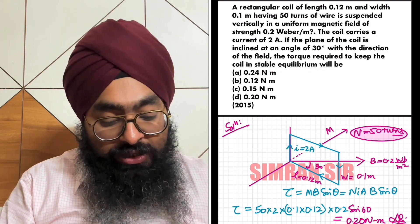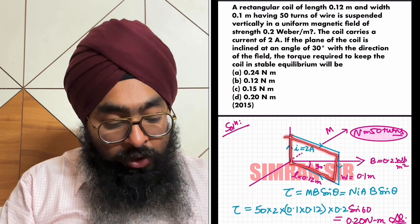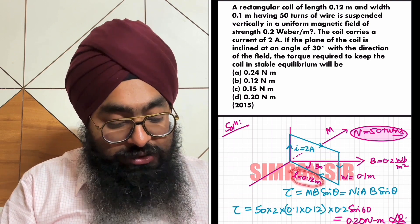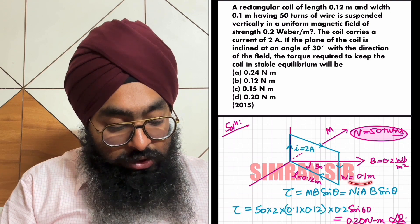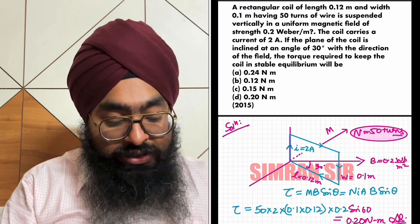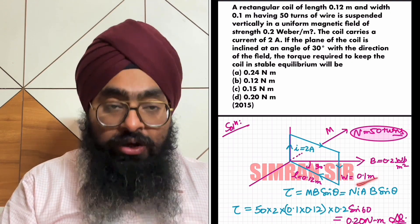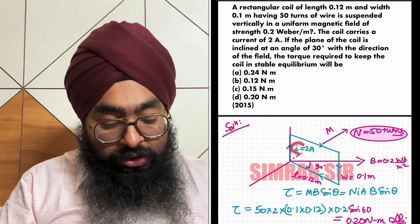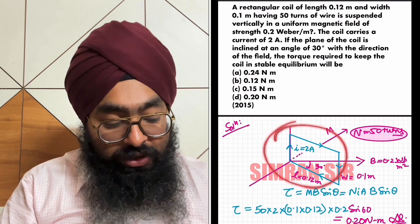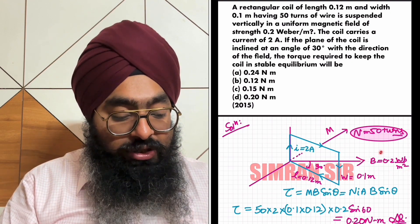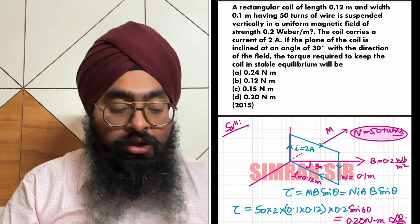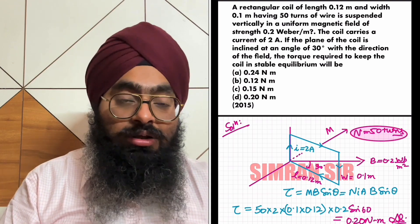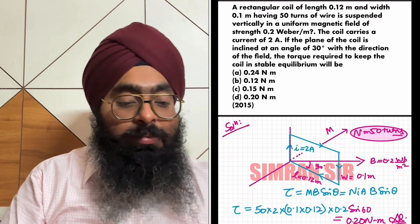So we have a coil: length is 0.12 meters, width is 0.1 meter. Coil current is 2 ampere. Magnetic field strength is 0.2 weber per meter square. Number of turns is 50.